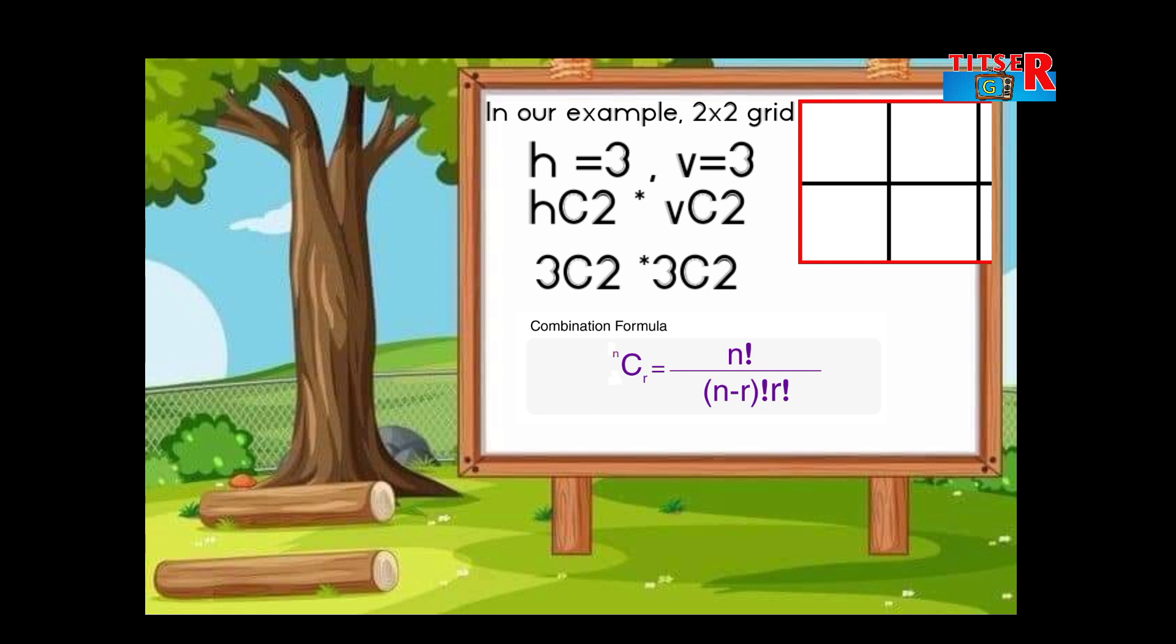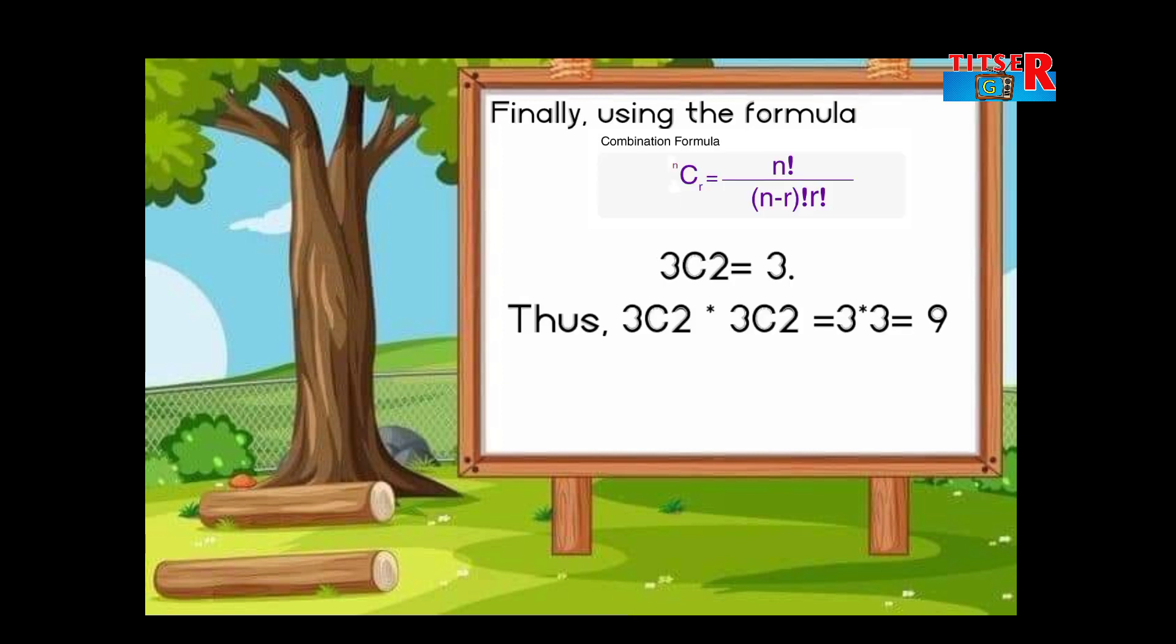So HC2 times VC2 is 3C2 times 3C2. Using the combination formula, we have n factorial divided by r factorial times n minus r factorial.